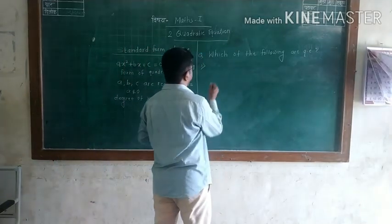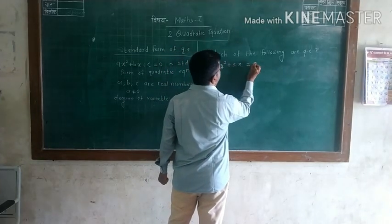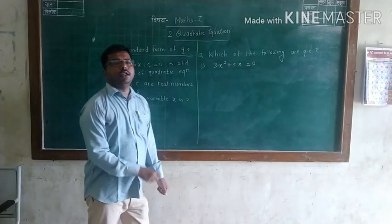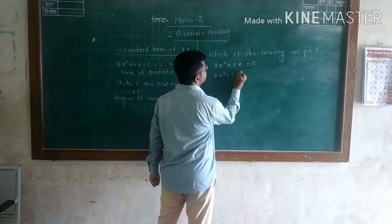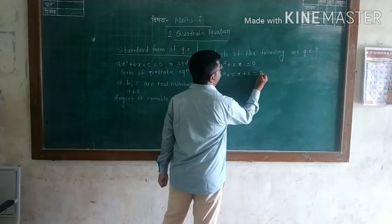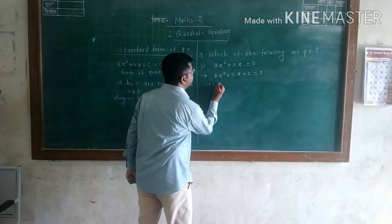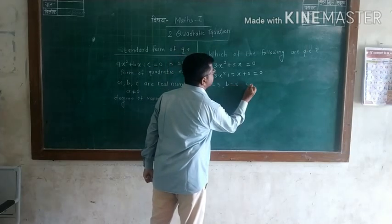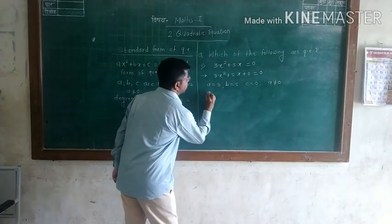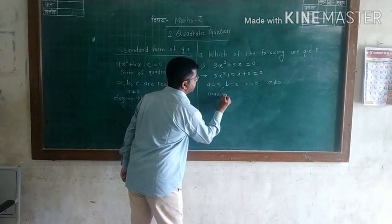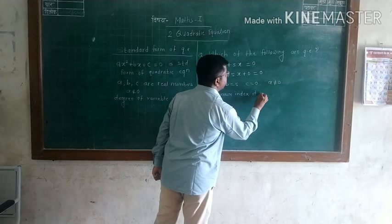First example: 3x² + πx = 0. We write this in standard form as 3x² + πx + 0 = 0. Here a is equal to 3, b is equal to π, and c is equal to zero, where a is not equal to zero, and the maximum index of the variable is two.